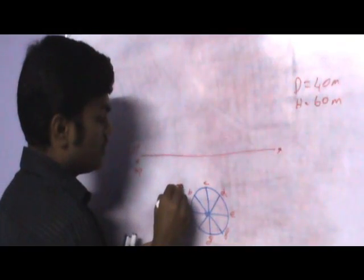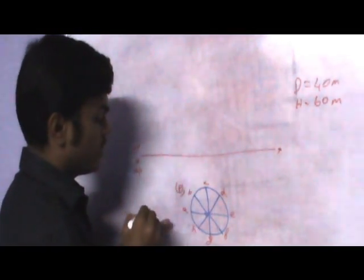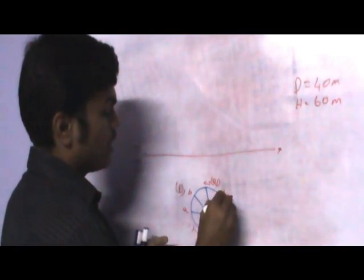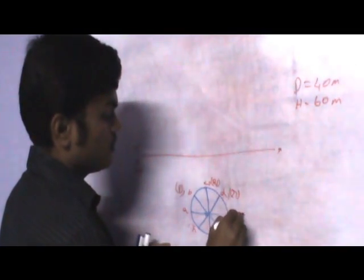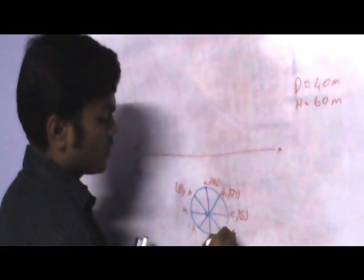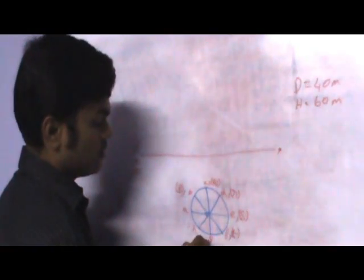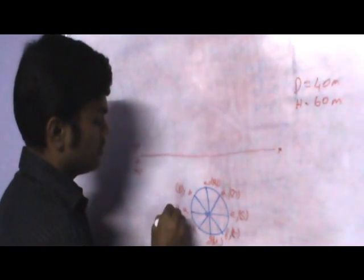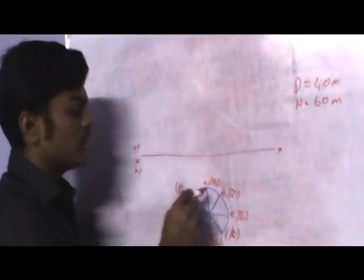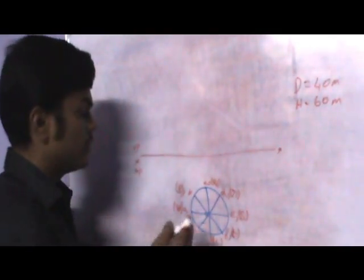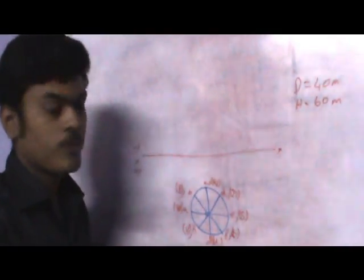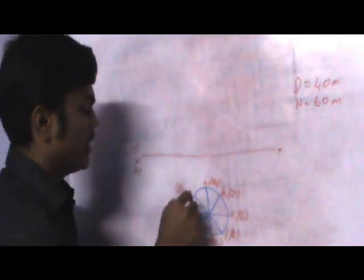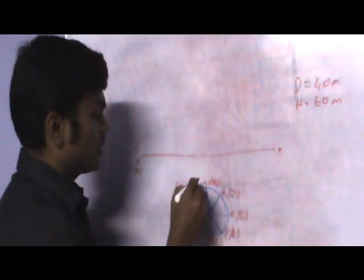Let me give names for the bottom face also. The bottom face points are P, Q, R, S, T, U, V, W — these are the bottom face of the cylinder. Since they are at the bottom and behind the top face, I have given them in brackets.